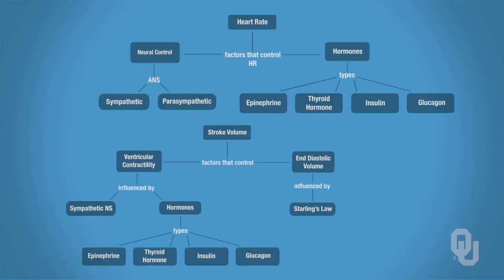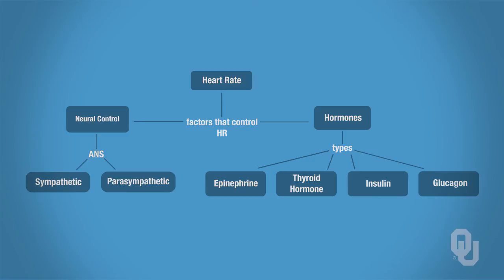Now let's return to cardiac output and explore how heart rate and stroke volume affect it. Remember, cardiac output is calculated by multiplying heart rate times stroke volume. So if heart rate increases, cardiac output increases; or if stroke volume decreases, cardiac output decreases, and so on.